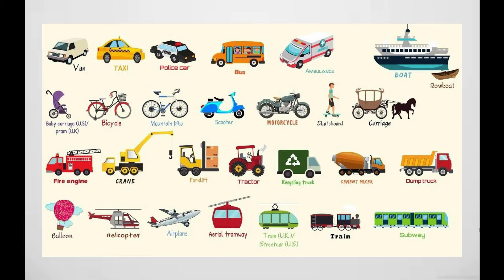What are they? Land transport, air transport, and water transport. Examples include: cycle, car, aeroplane, train, boat, helicopter, glider, ship, submarine, fire engine, bus, ambulance, scooter, and police jeep.